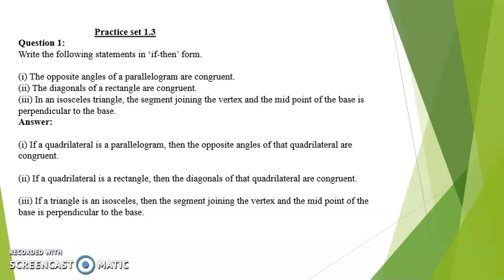Third. In an isosceles triangle, the segment joining the vertex and the midpoint of the base is perpendicular to the base. Answer: If a triangle is an isosceles triangle, then the segment joining the vertex and the midpoint of the base is perpendicular to the base.